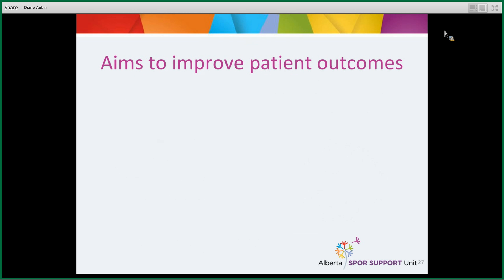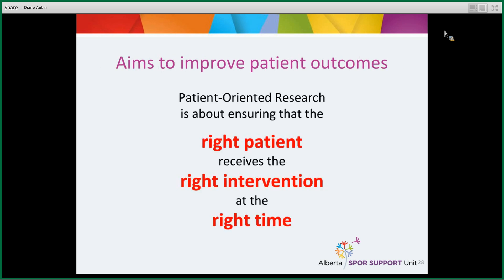The other element of patient-oriented research — after meaningful patient engagement and patient-identified priorities — is improving patient outcomes. This is a more altruistic and admittedly more difficult aim, but all health research works toward it. Specifically, patient-oriented research is about ensuring that the right patient receives the right intervention at the right time, so patients have a real say in making sure they get the right intervention in a timely manner.